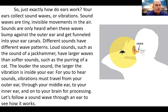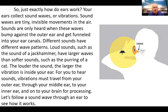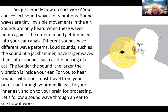So just exactly how does your ear work? Your ears collect sound waves or vibrations. Sound waves are tiny invisible movements in the air. Sounds are only heard when these waves bump against the outer ear and get funneled into your ear canal. Different sounds have different wave patterns. Loud sounds, such as the sound of a jackhammer, have larger waves; softer sounds, such as the purring of a cat, have smaller waves. The louder the sound, the larger the vibration inside your ear. For you to hear sounds, vibration must travel from your outer ear through the middle ear to your inner ear and on to the brain for processing.